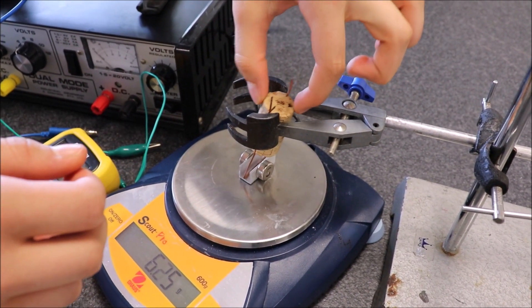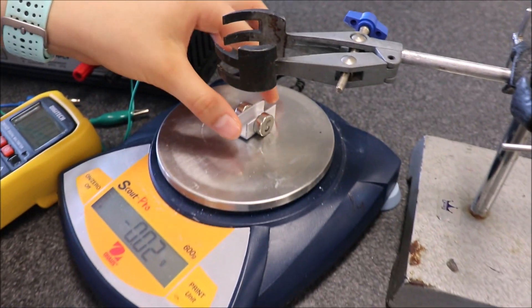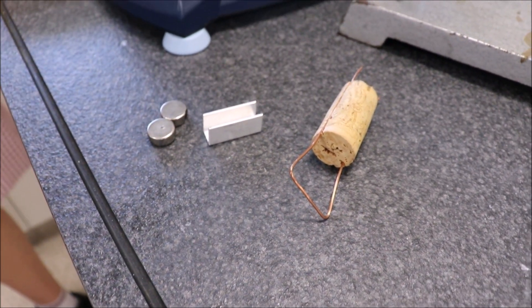Here the student is taking this apart. You can see the cork with a piece of stiff copper wire in there, and you can see the little metal aluminum yoke made out of a channel and two little magnets stuck together.